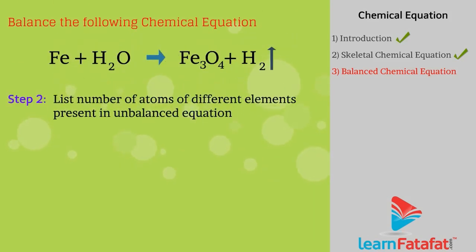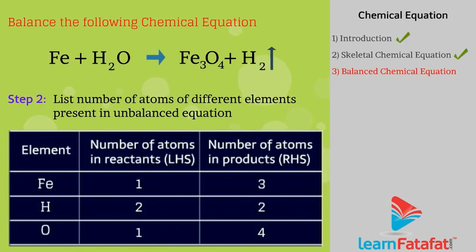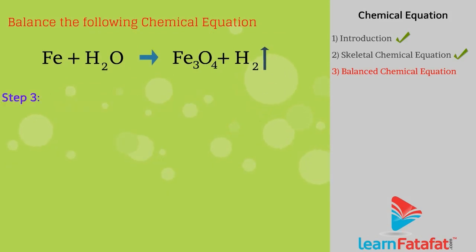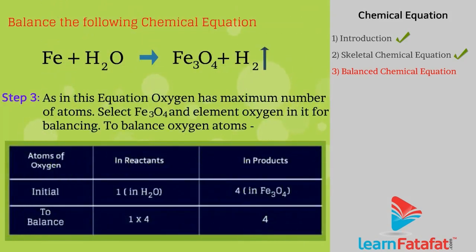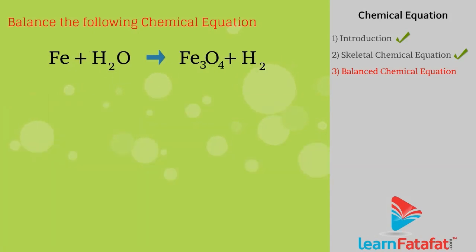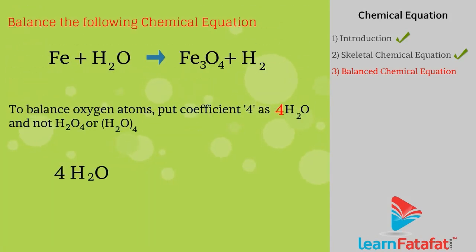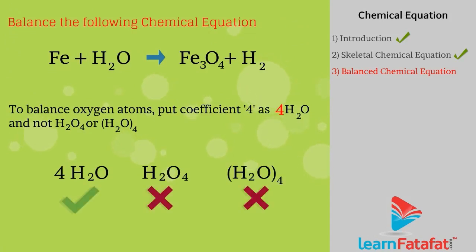Step 3: Since oxygen has the maximum number of atoms, select Fe3O4 and the element oxygen in it for balancing. To balance oxygen atoms, consider the atoms of oxygen in reactants and products. Put the coefficient 4 before H2O — written as 4H2O, not H2O4 or (H2O)4.